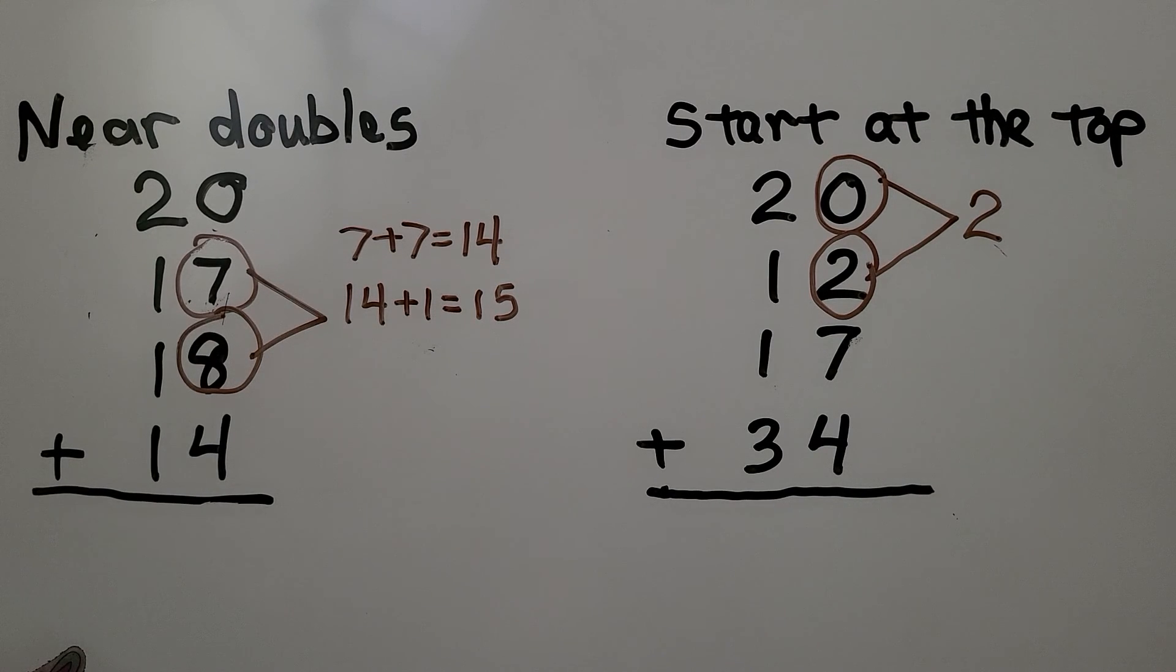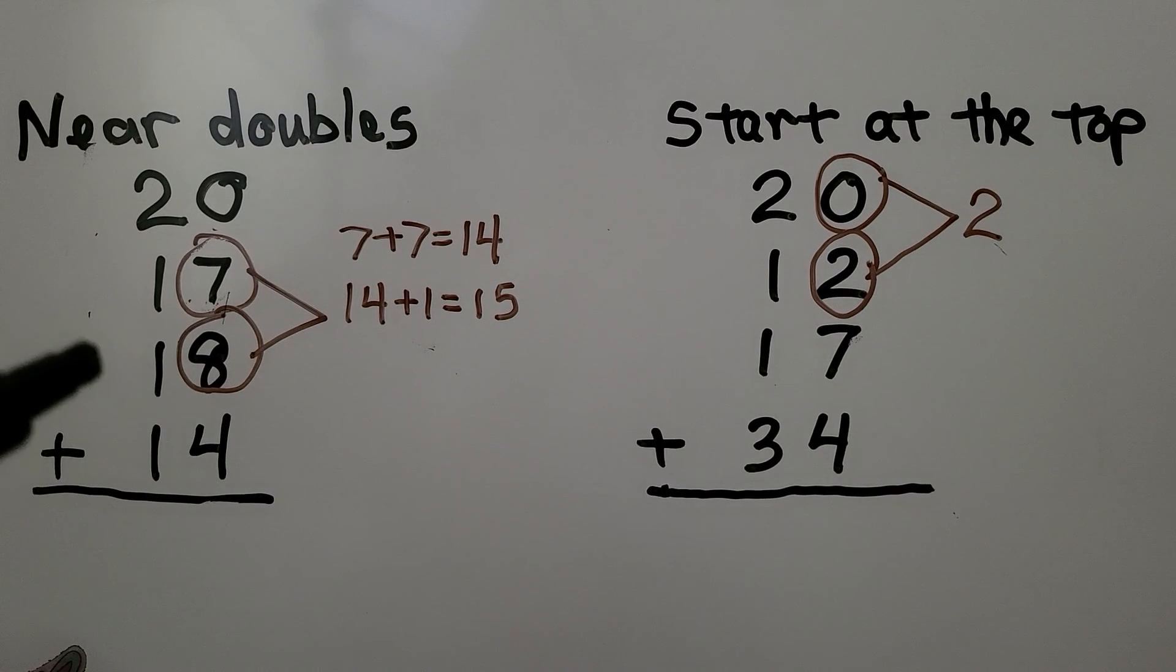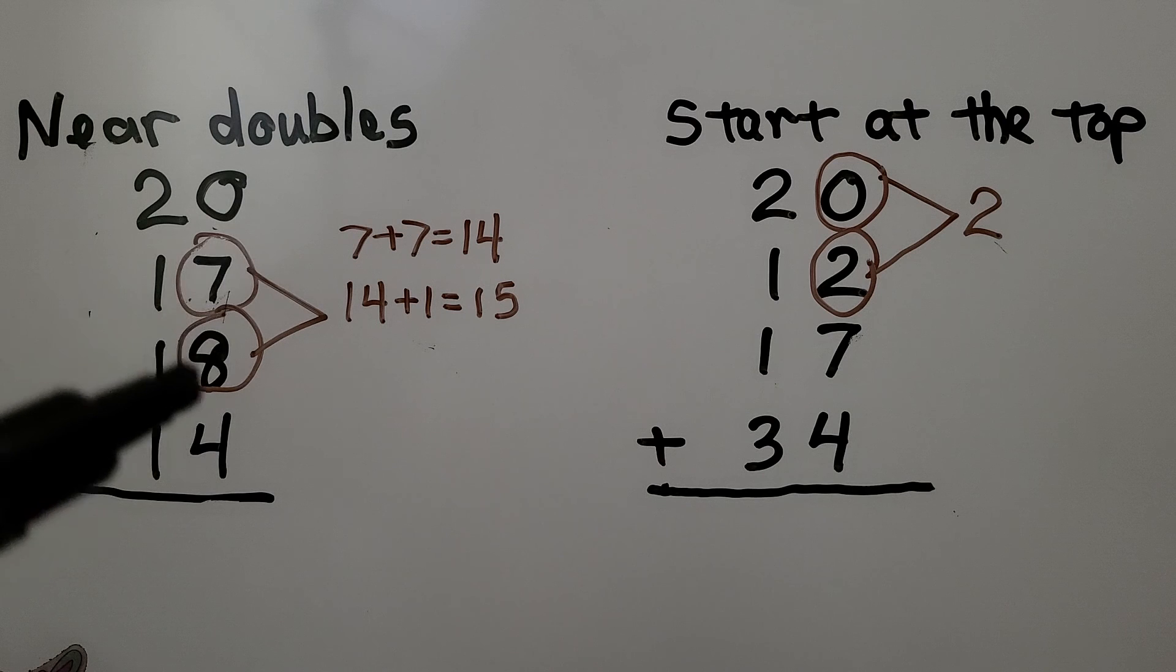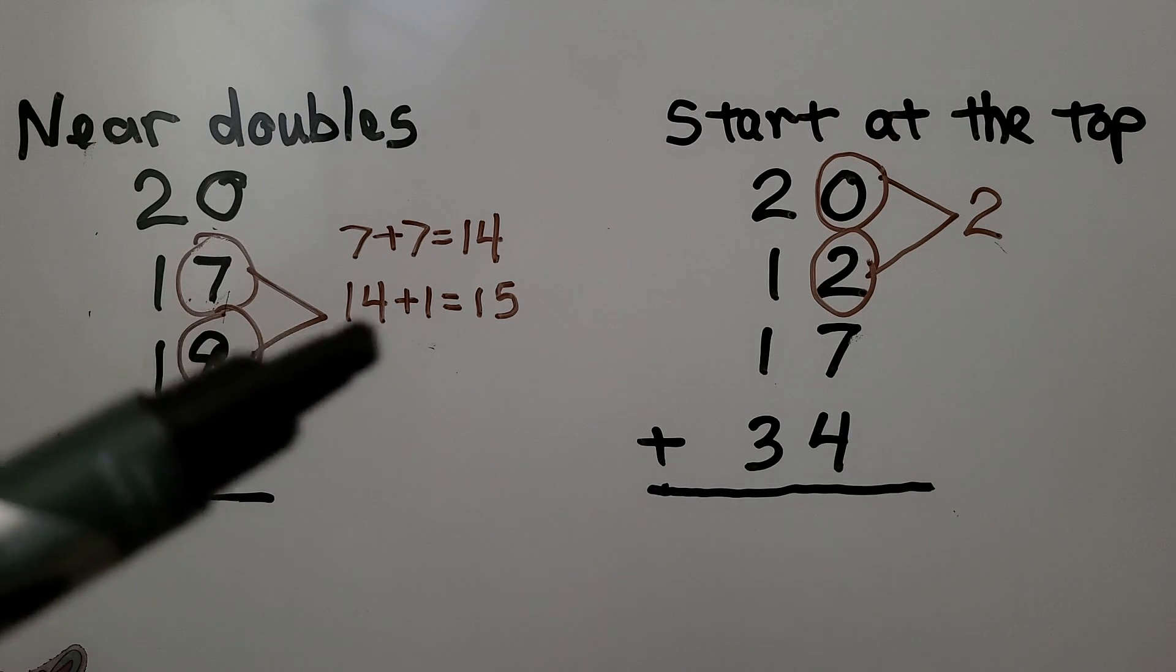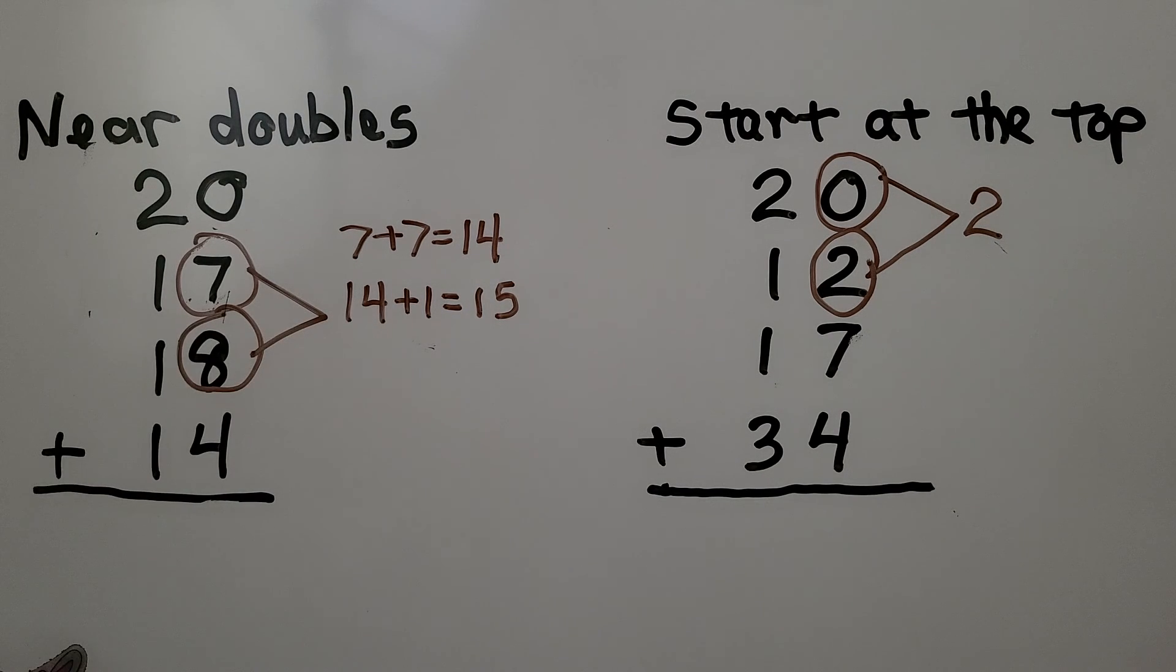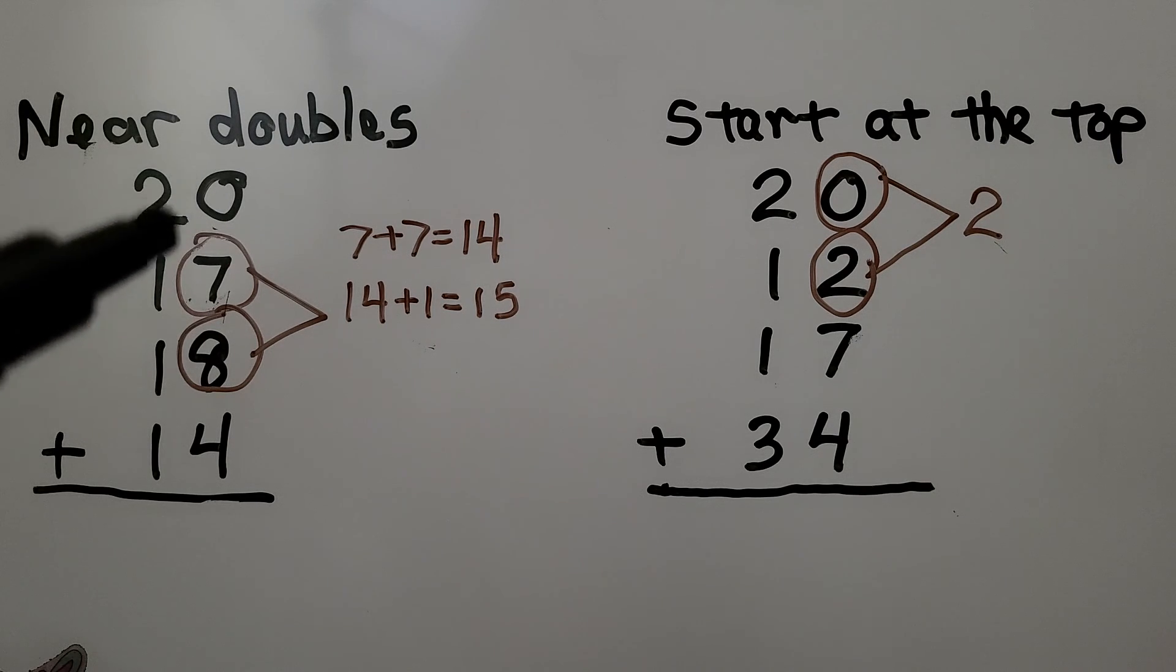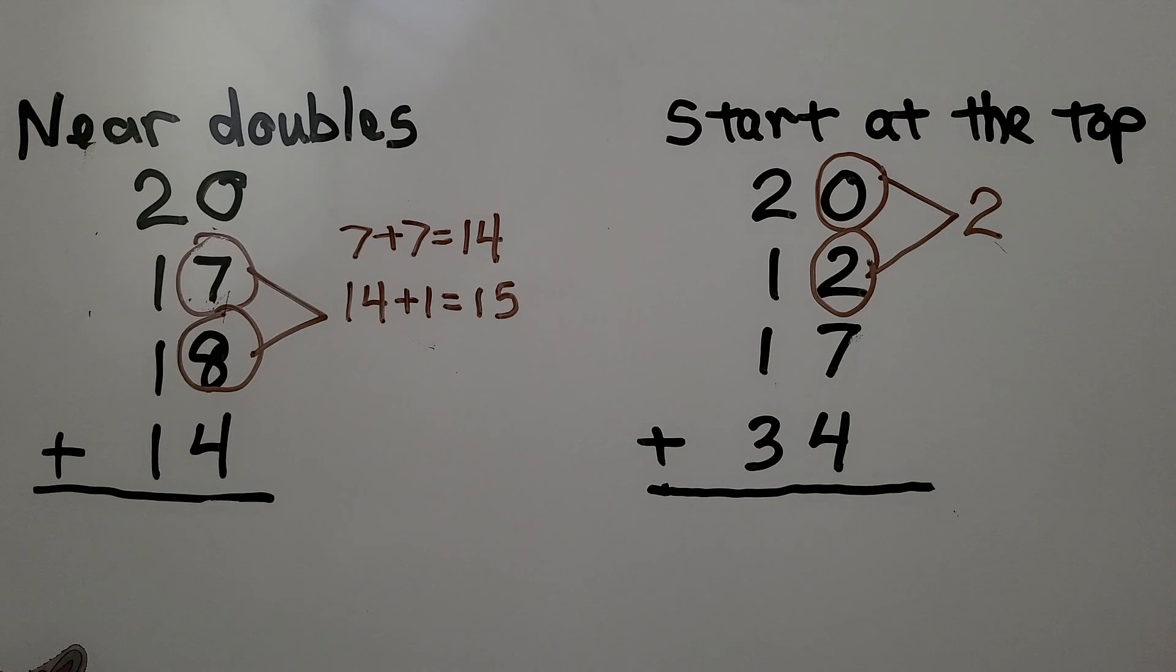When we use the strategy add near doubles, we look for two addends that are near each other, that are almost doubles. 7 plus 7 is equal to 14, so 7 plus 8 must be one more than that. It's 15. If we add 0, it's still 15, and 4 more is 19.